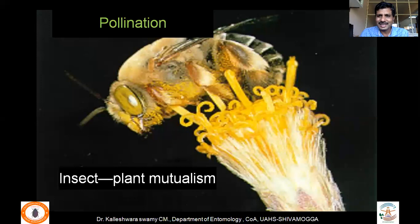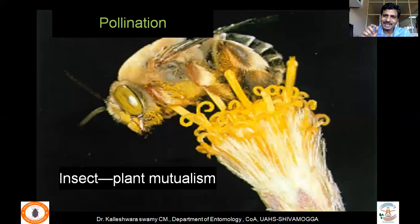Pollination is one of the best ecosystem services provided to human beings. Just imagine if there were no bees or other pollinators — seeds would not form, food would not exist, and we would not survive. This is a very important ecosystem service that insects provide.